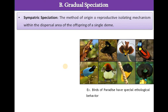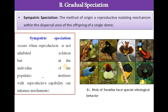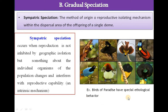The next type is sympatric speciation — the origin of reproductive isolating mechanisms within the dispersal area of the offspring of a single deme. Sympatric speciation occurs when reproduction is not inhibited by geographic isolation, but something about the individual organisms changes and interferes with reproductive capability. It is an intrinsic mechanism. The example is the bird of paradise, which shows different kinds of ethological behavior leading to speciation.